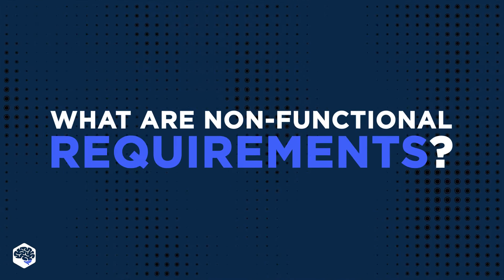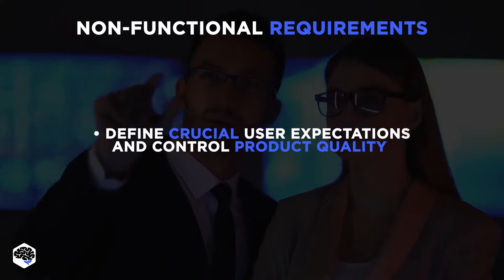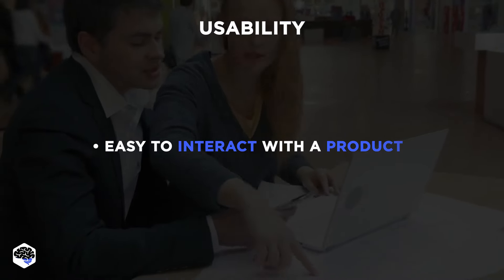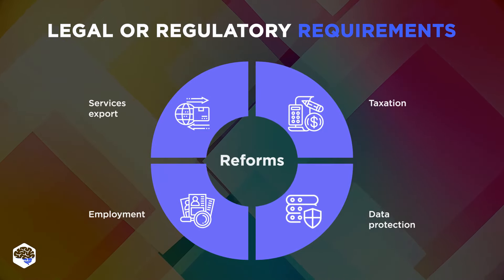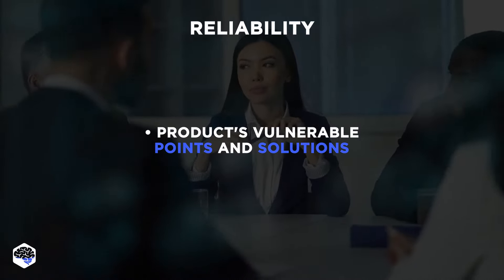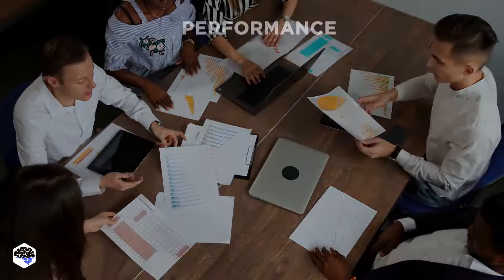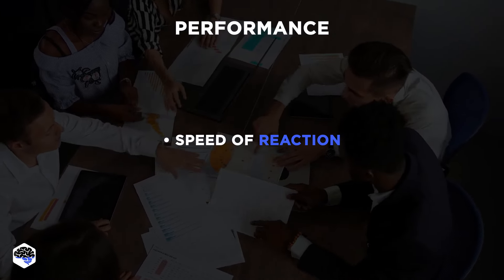What are non-functional requirements? These are attributes that will help you find crucial user expectations and control product quality. The list of non-functional requirements is very specific to the type of product and industry, but we can boil it down to four main ones: Usability — evaluating the ability of a user to easily interact with a product to achieve their needs. Legal or regulatory requirements — you should know which industry laws your product must comply with. Reliability — describe your product's vulnerable points and solutions, analyze similar existing applications, examine safety risks, and evaluate typical problems. Performance — assess how a product reacts to users' actions, the speed of reaction to clicks, mouse hovering, and key presses.